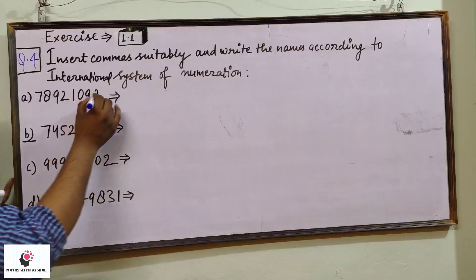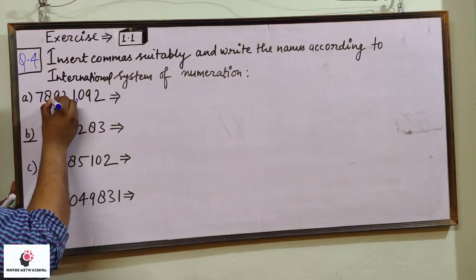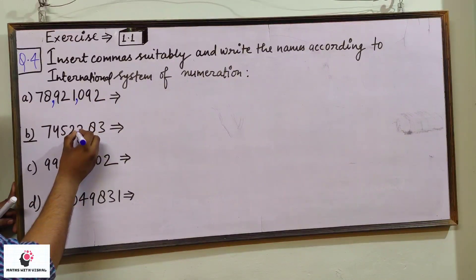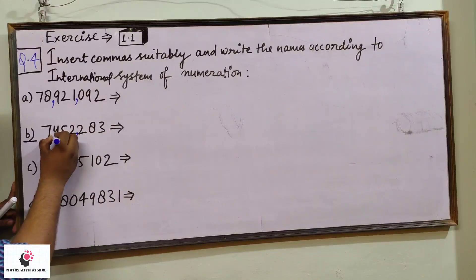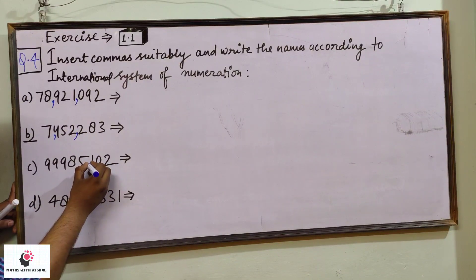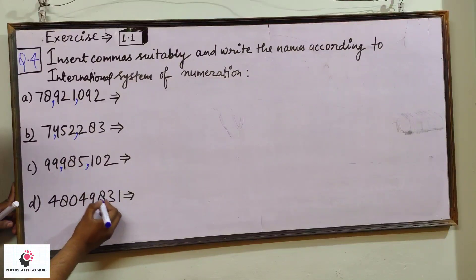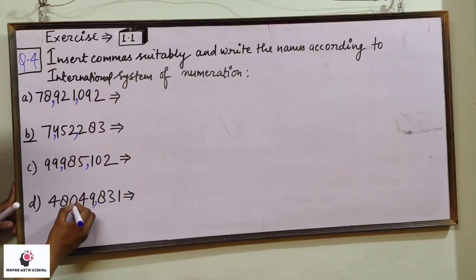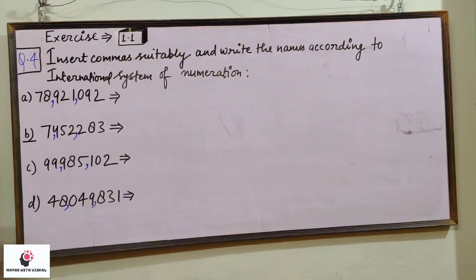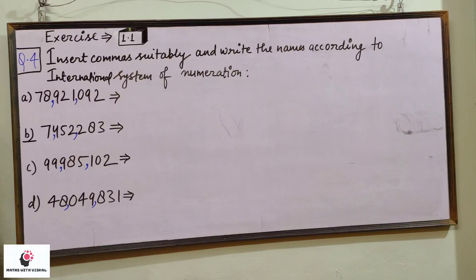So let us put the commas — one, two, three; one, two, three — for all the numbers. Comma placing is done. Remember, in your examination whenever it is conducted, you will also have to put the comma, so you will get marks for the comma. If you are not putting the commas correctly, you will get mark deduction. So keep this thing in mind.